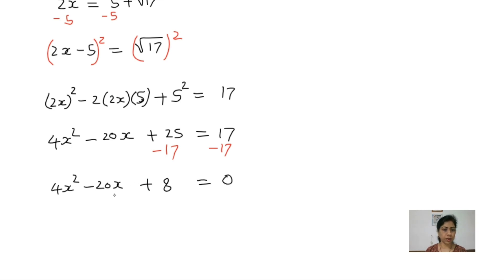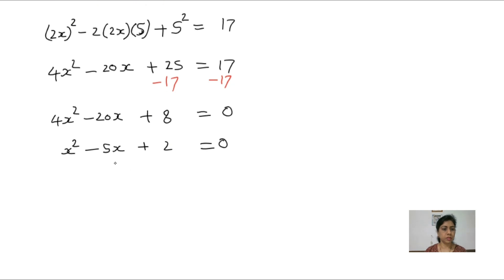This whole equation we can divide by 4. 4 cancel just x square, 20 divided by 4 we get 5x, and 8 divided by 4 we get 2. Here this 5x we can transfer right side. So x square plus 2 equals 5x. Here I am not solving for x, we can do algebraic manipulation so this question will be easier. This is equation 1.